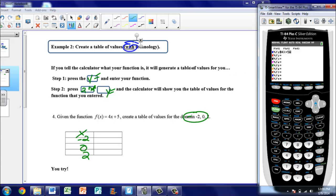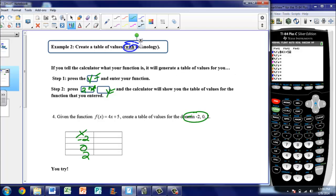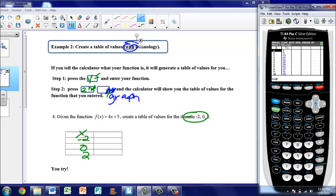Then step two says, press second y equals. So the second button is this one over here, second. Oops, my bad. Go back, time out. This should say second graph. I'm thinking of something else. So cross it out. My mistake. This should say second graph. So second graph is what I really want to do. Second graph, because notice up above the graph button, it says the word table.